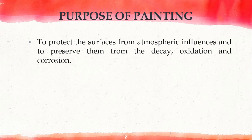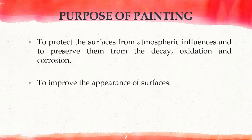Why should we do painting? What is the purpose of applying paint on any surface? The first reason is to protect that surface from all weathering actions and atmospheric effects, such as decaying, oxidation, and corrosion in the case of iron surfaces. To prevent the surface from deteriorating, we paint it — in that sense, we are protecting it.